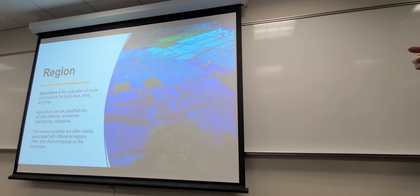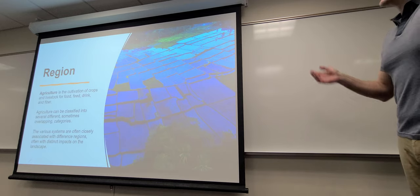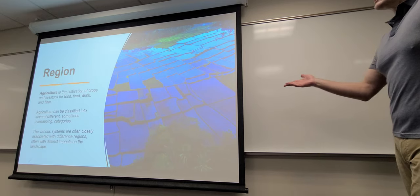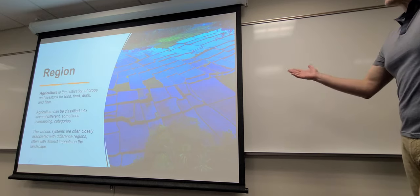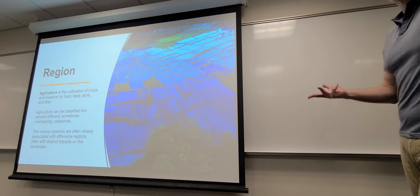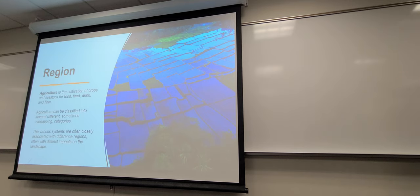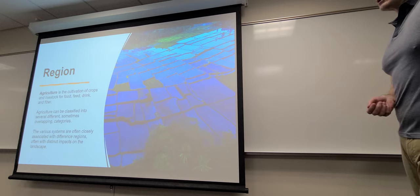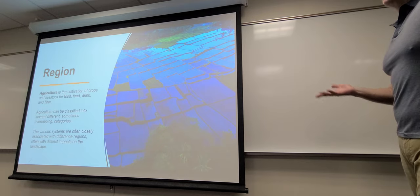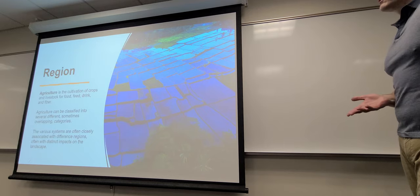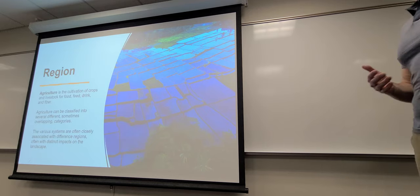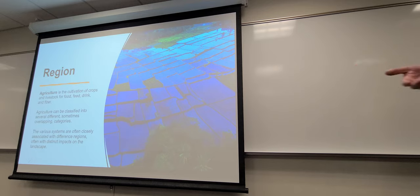Rice farming is difficult to industrialize because the processes tend to rust since you need so much standing water, and you need people out there working the fields pretty constantly. So it's one of those types of agricultural fields where it's not losing jobs as quickly as other areas of agriculture, but at the same time that's limiting how much they've been able to increase the varieties and crops.